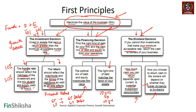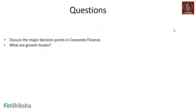There will be a more specific discussion around this objective and whether it translates into maximizing stock prices. As we end the video, a couple of questions to consider: discuss the major decision points in corporate finance, and what do you mean by growth assets for a firm?